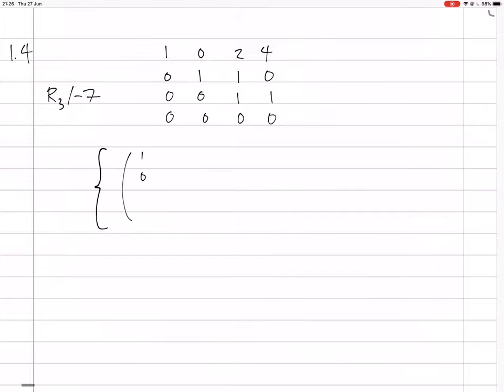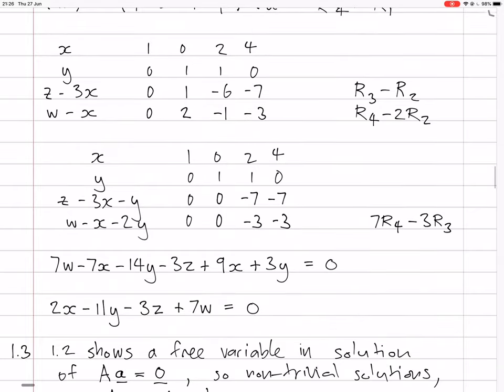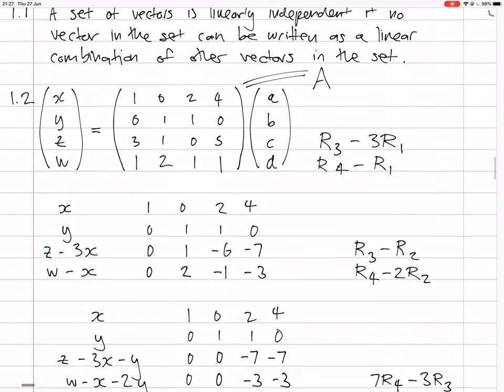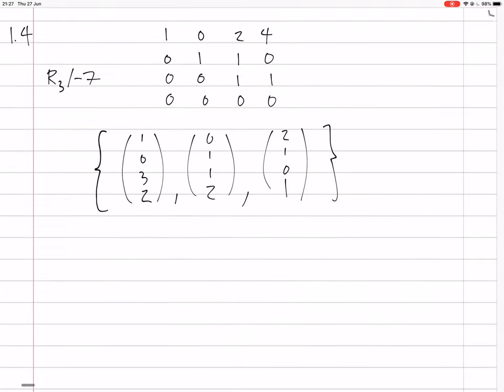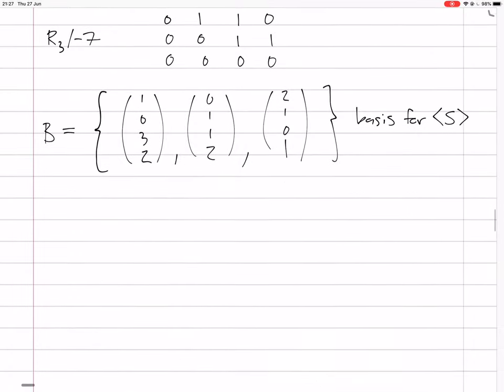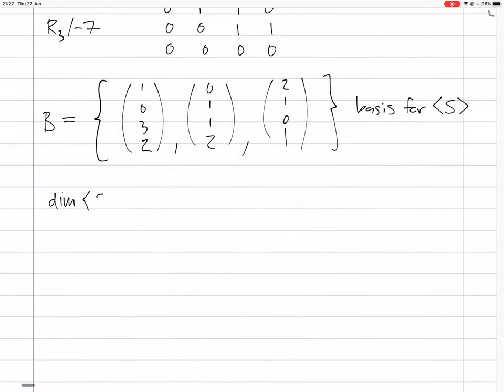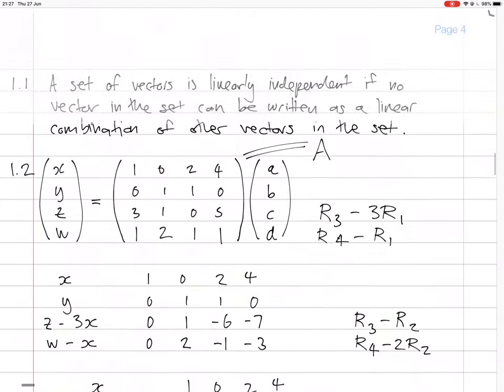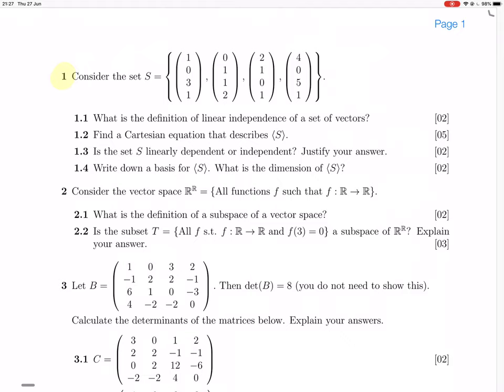First three vectors. So they were 1, 0, 3, 1, then 0, 1, 1, 2, then 2, 1, 0, 1. So that means that's a basis. The basis, it's a basis for the span of S. And the dimension, then, of the span of S is the size of the number of vectors there, which is 3. Okay. Is that all? Yes. Okay.